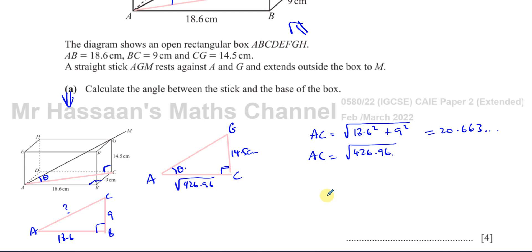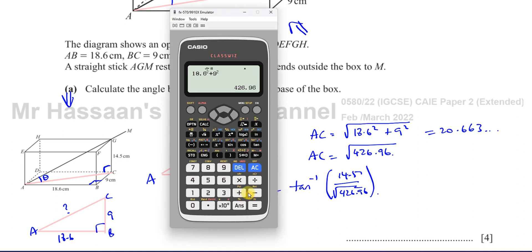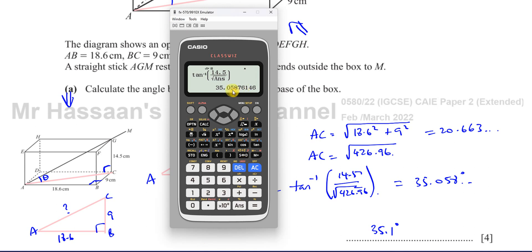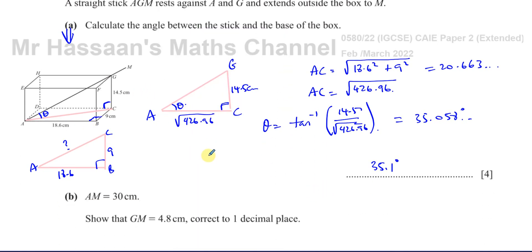Now I can find angle theta using trigonometry. GC is the opposite side and AC is the adjacent side, so theta equals the inverse tan of 14.5 divided by √426.96. Calculating that gives 35.058 degrees. Since the question doesn't specify a format, we round to one decimal place: the answer is 35.1 degrees.